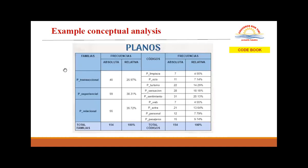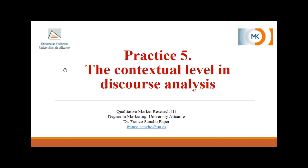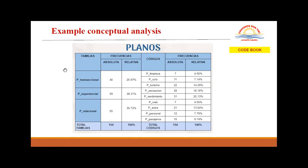The last level they discussed is transactional, experiential, and relational. From my point of view, the transactional is a little bit low taking into account the service, because it's a low-cost service and probably the cheapest way to reach Tabarca. I would have expected transactional to appear more and experiential less. So as you see, there are different examples and different ways to show the data.